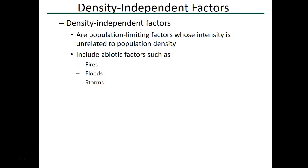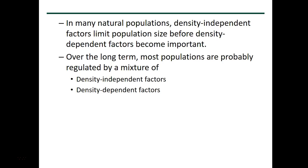There are also density-independent factors — these affect the population regardless of its size. Examples include fire, flood, or storm — these can strike a large or small population equally. Most natural populations have density-independent factors limiting population size before density-dependent factors become important. For example, a drought decreasing food supply occurs before the population grows large enough to experience the accumulation of toxins from waste.